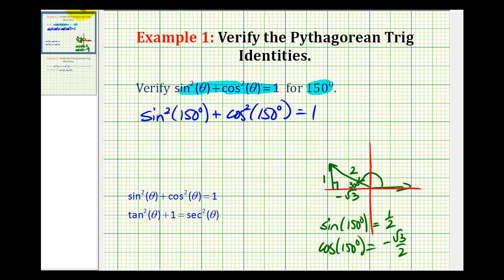Now we'll perform substitution. We'll replace sin(150°) with ½, so this would be (½)², plus cos(150°) would be -√3/2, but again this is squared. We want to show this equals 1. Well, (½)² is ¼, and (-√3/2)² would be ¾, and ¼ + ¾ = 1, so we have verified this identity for the given angle.